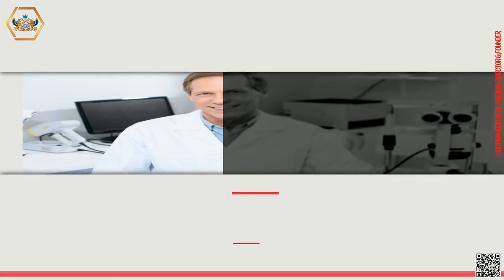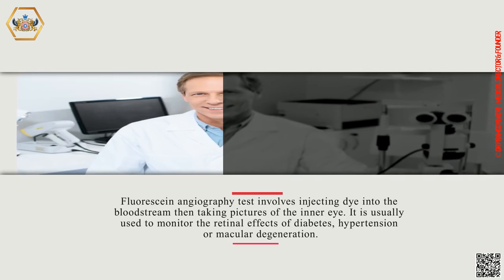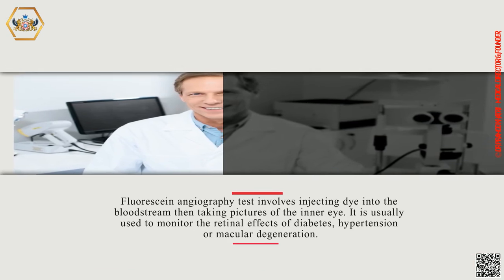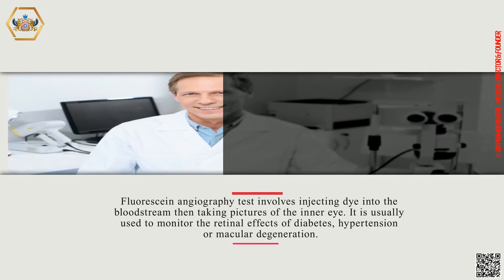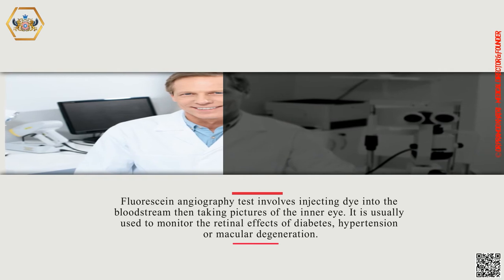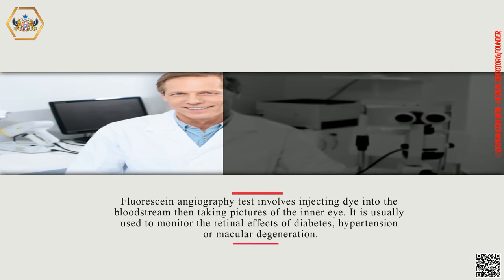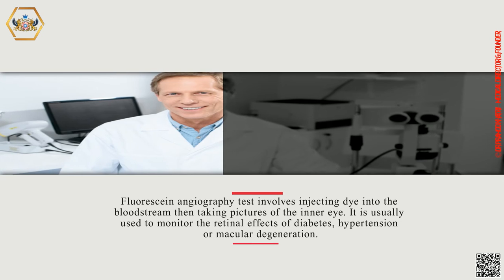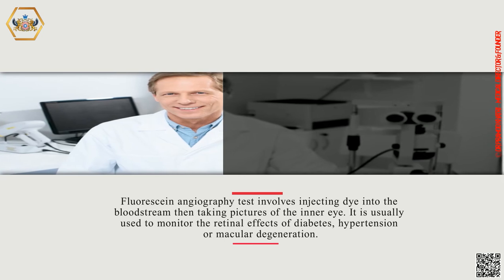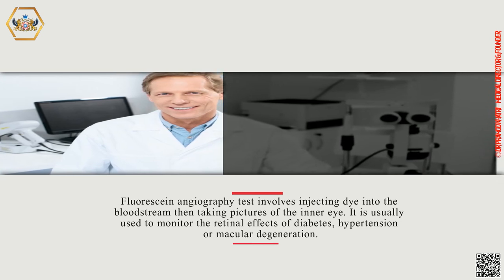The fluorescein angiography test involves injecting dye into the bloodstream, then taking pictures of the inner eye. It is usually used to monitor the retinal effects of diabetes, hypertension, or macular degeneration.